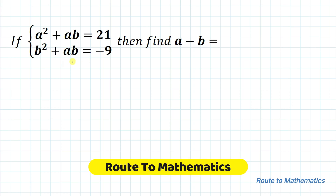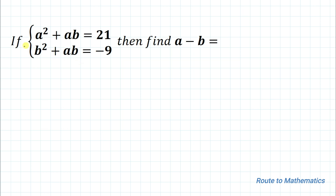Hello everyone, welcome to Root 2 Mathematics. In this video we are going to solve this interesting system of equations. We have given: if a² + ab = 21 and b² + ab = -9, then find a - b. We have two equations and we are asked to find the difference of the variables a and b.